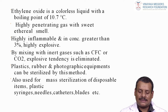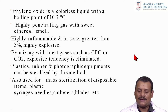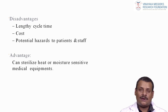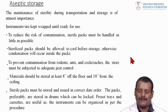Ethylene oxide is also used for mass sterilization of disposable items such as plastic syringes, needles, catheters, and plates. The disadvantages include a lengthy cycle time, cost factor, and potential hazards to patients and staff. The main advantage is that it can sterilize heat- or moisture-sensitive medical equipment.